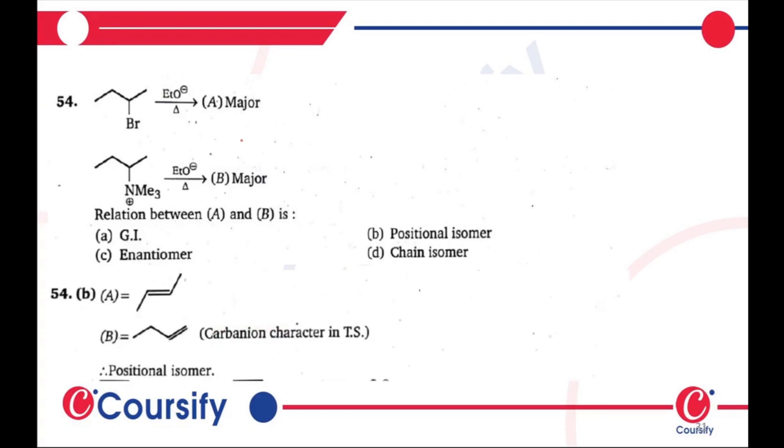What will you get in the first place? Trans-butene, and in the other place you will get butene positional isomer. The isomer is a positional isomer.